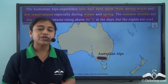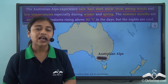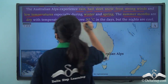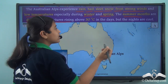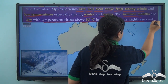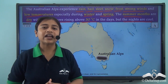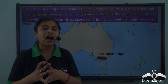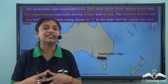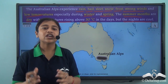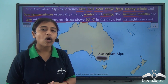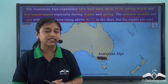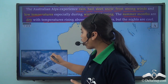During summers, temperatures rise above 30 degrees Celsius and summers are usually very mild. The summer months are dry and though temperatures rise above 30 degrees Celsius during the day, the nights are cool. The Australian Alps, which receive huge amounts of precipitation in the form of snow, sleet and frost with low temperatures during winter and spring, are mostly covered by snow almost throughout the year.